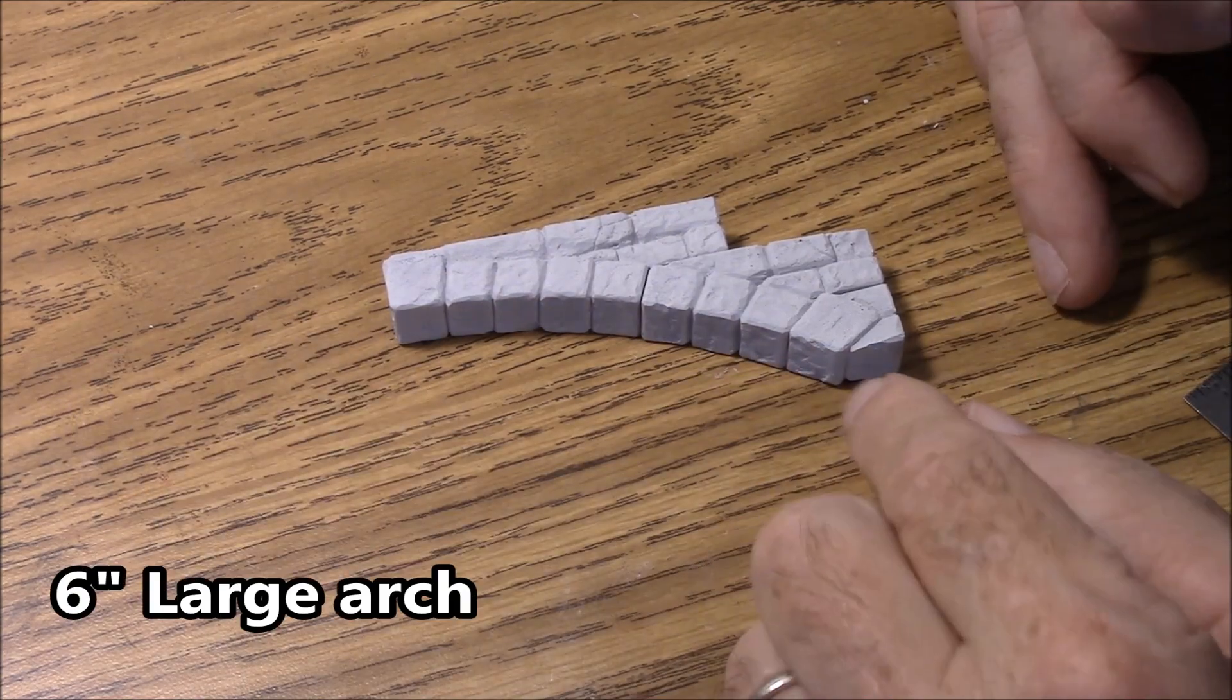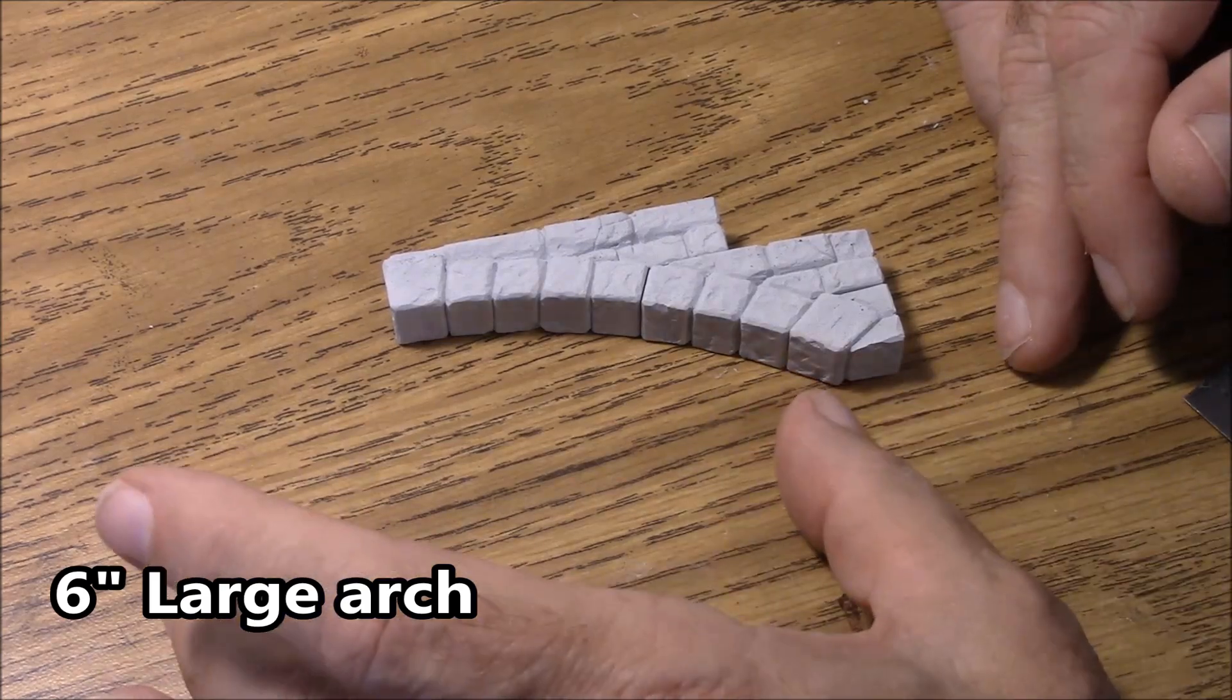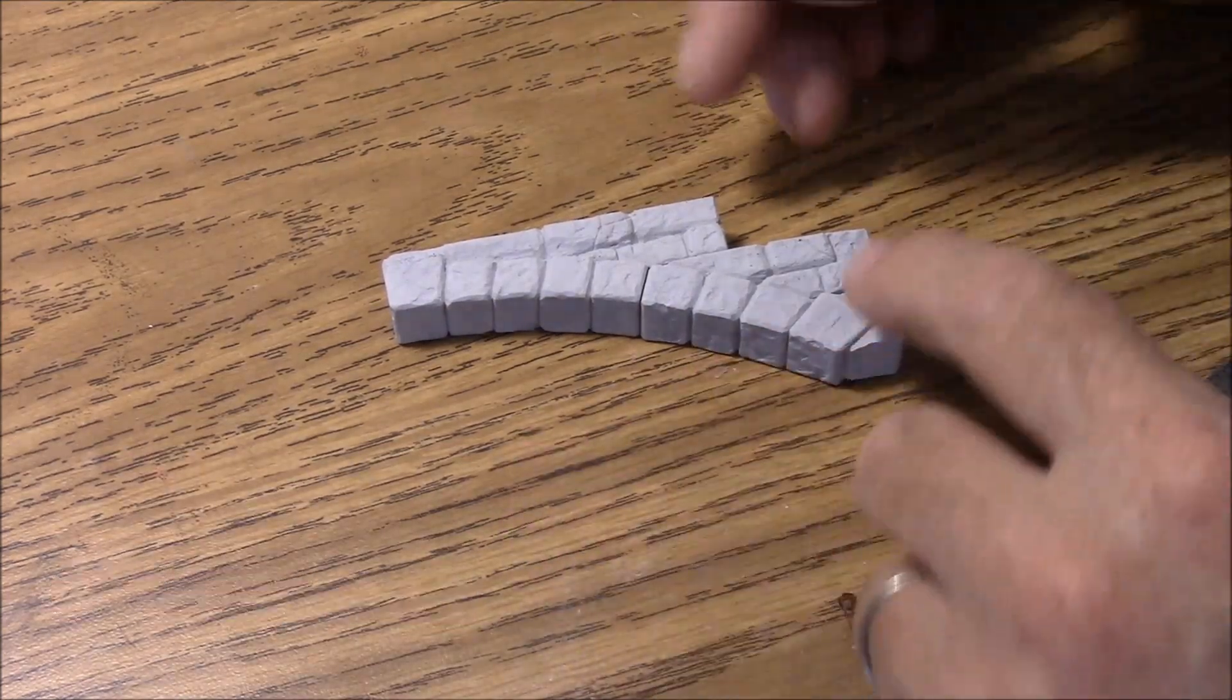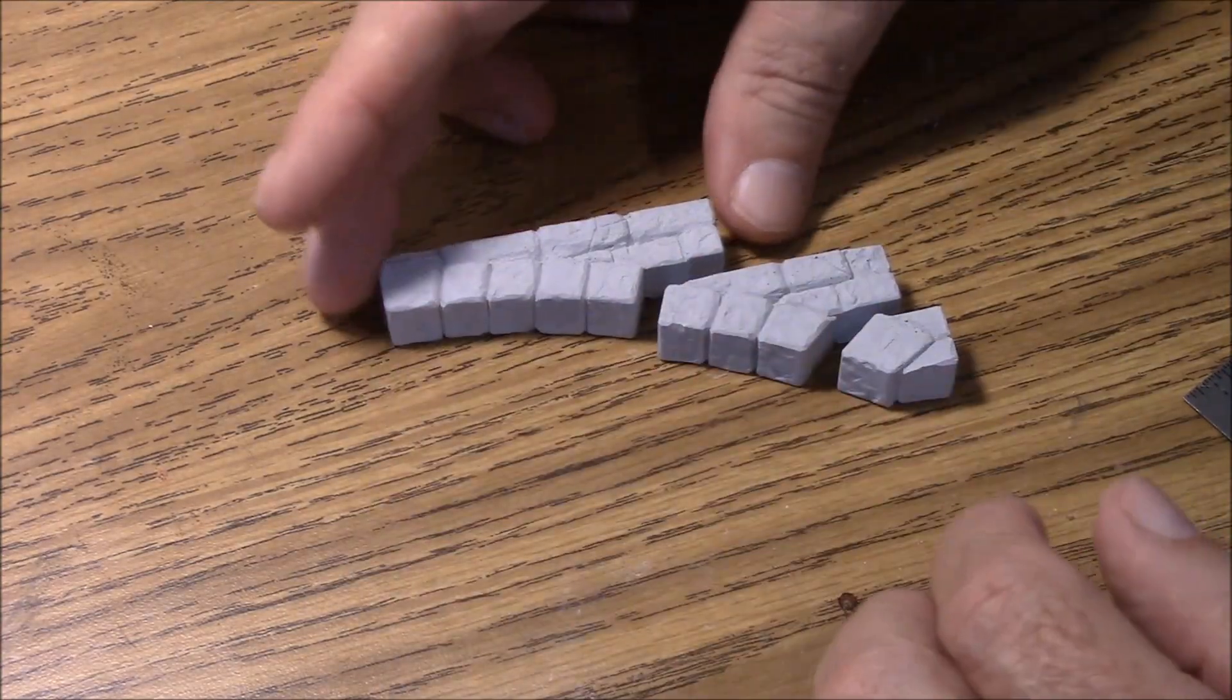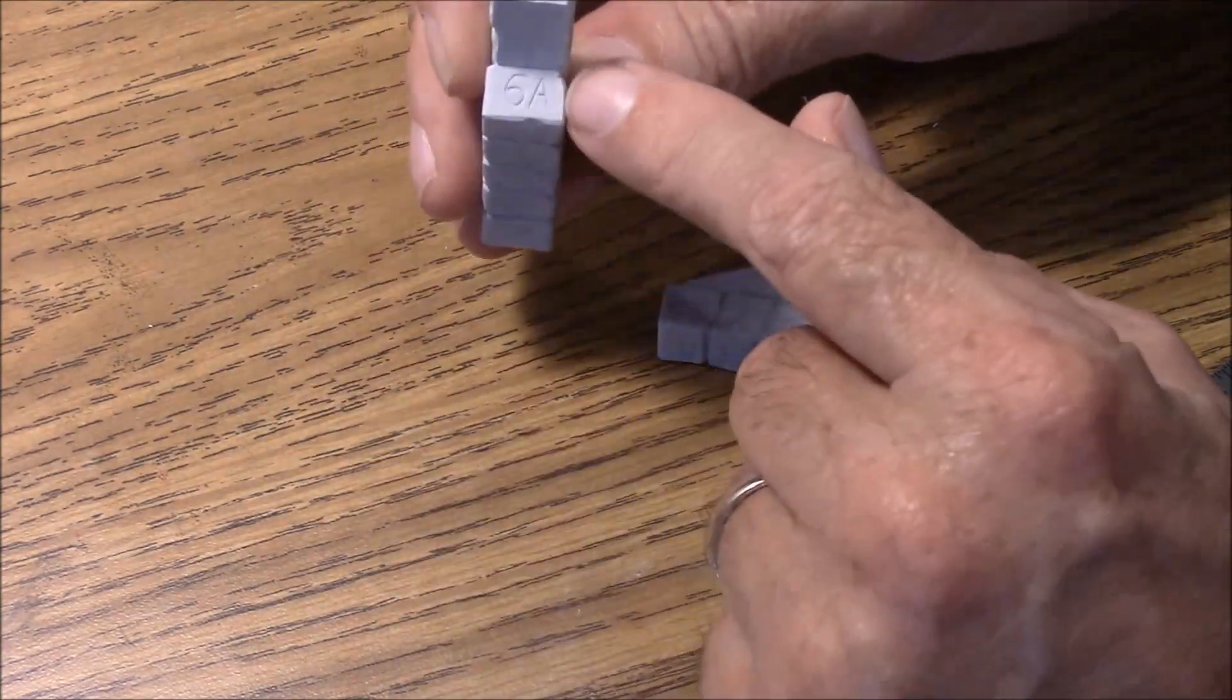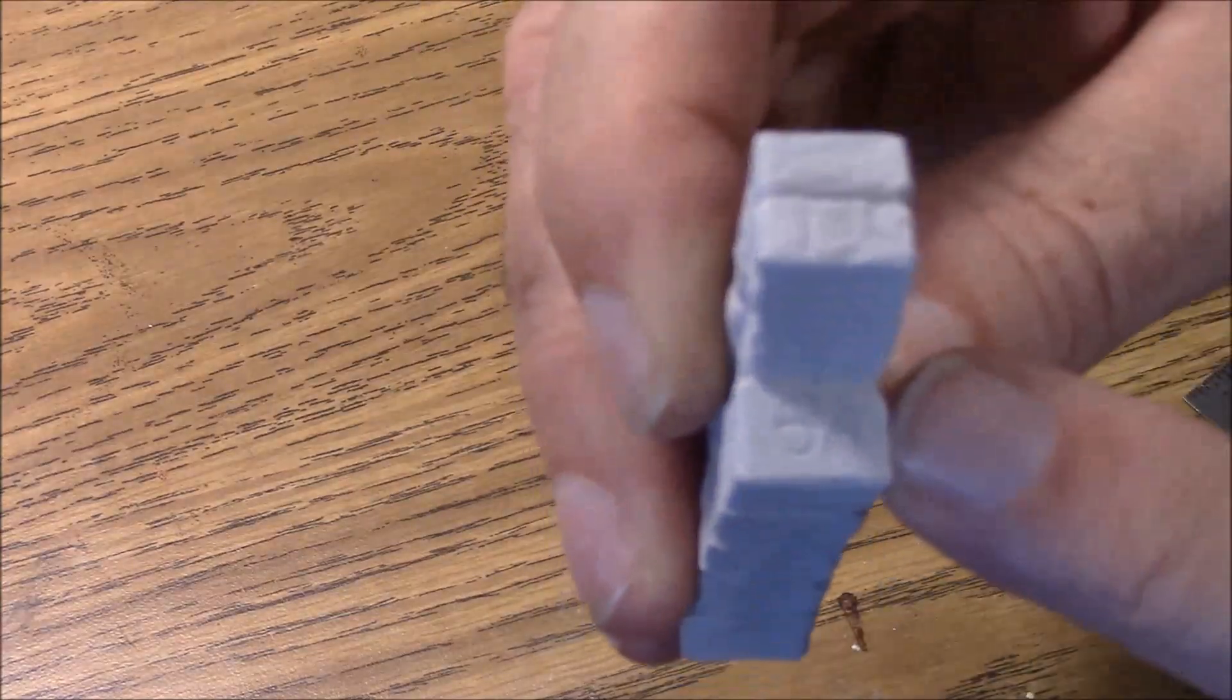This is the largest arch, a six-inch interior sized arch with three pieces. The way you'll identify them is I have labeled these. On the inside right here you'll notice I have a 6A. Let's get that close up—you see that's labeled as 6A.